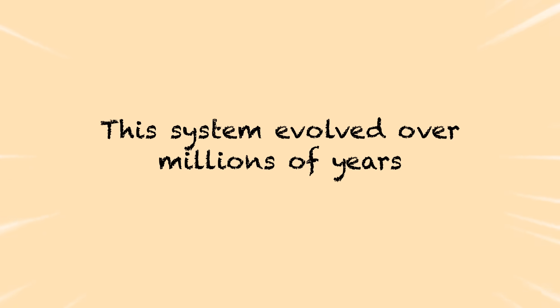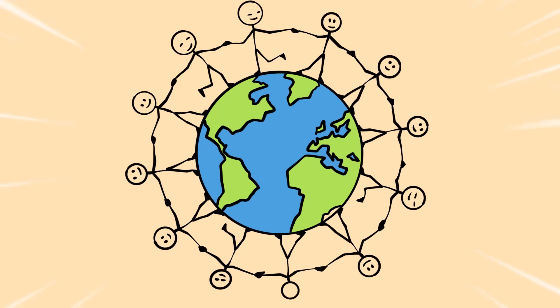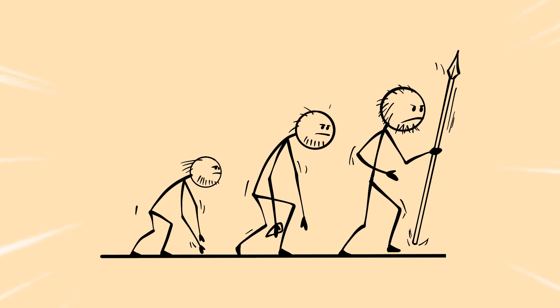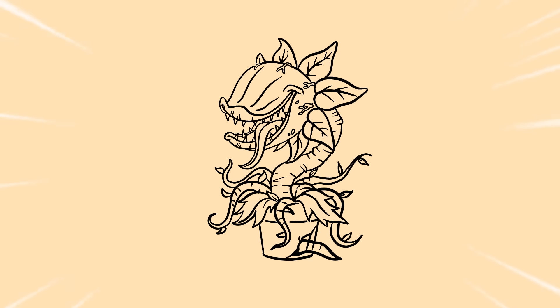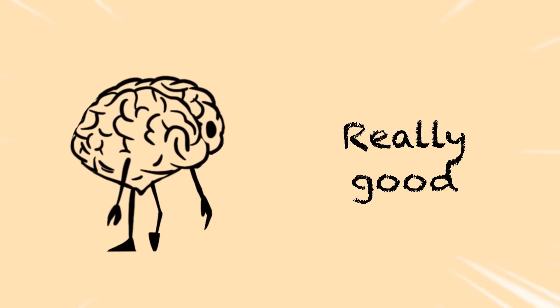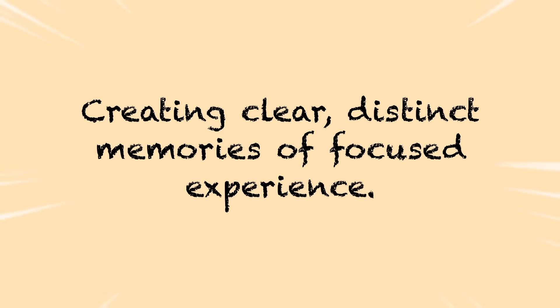This system evolved over millions of years when humans lived in a much simpler world. Our ancestors needed to remember where they found food, which plants were poisonous, and how to get back to shelter. So our brains got really good at creating clear, distinct memories of focused experiences.